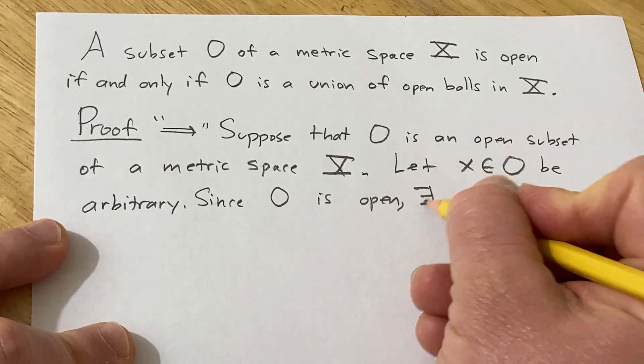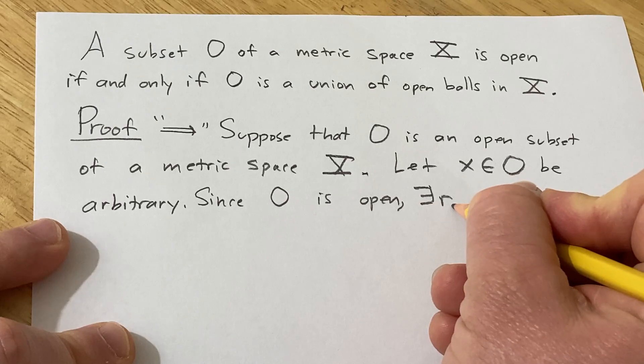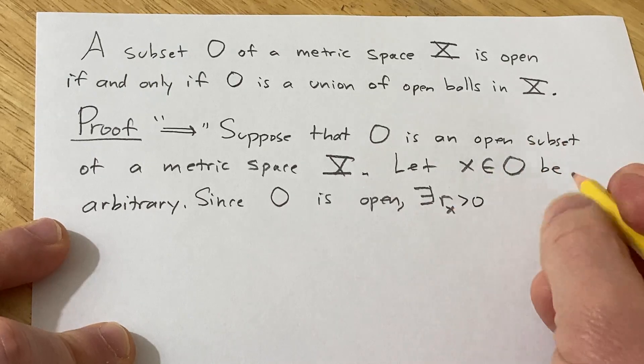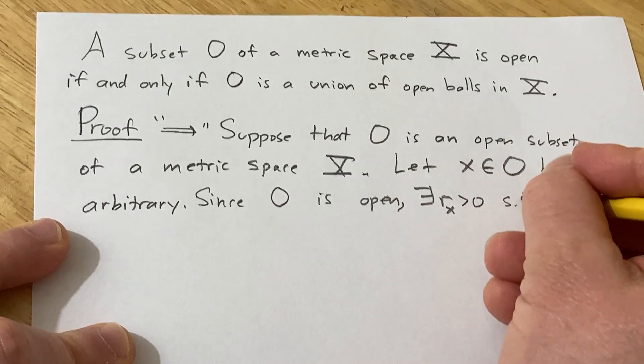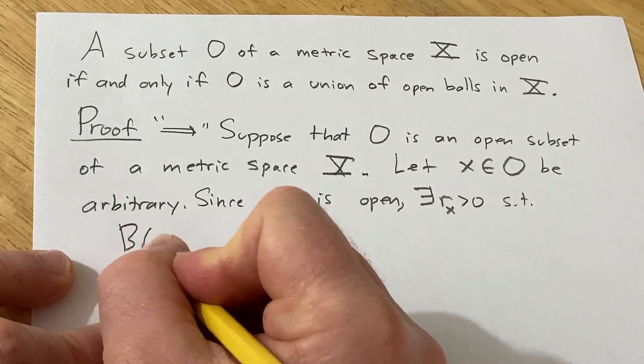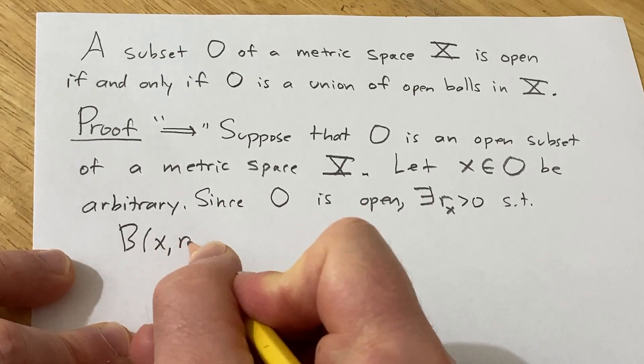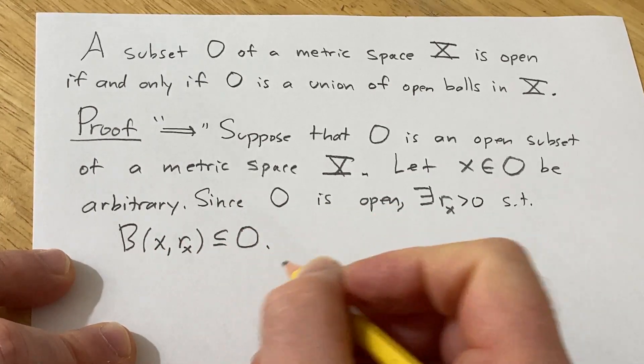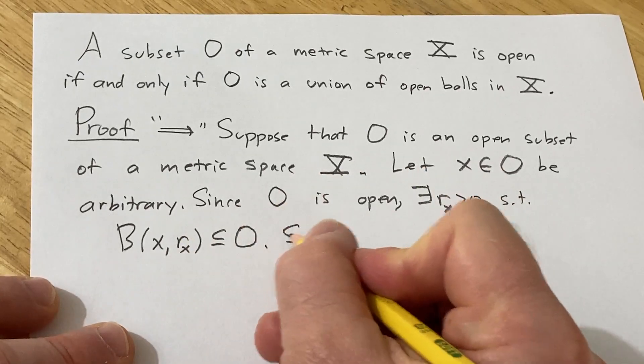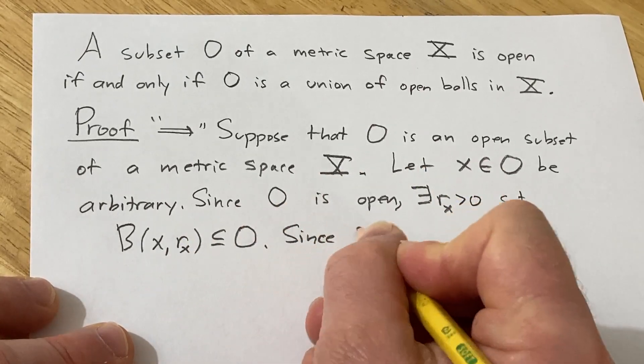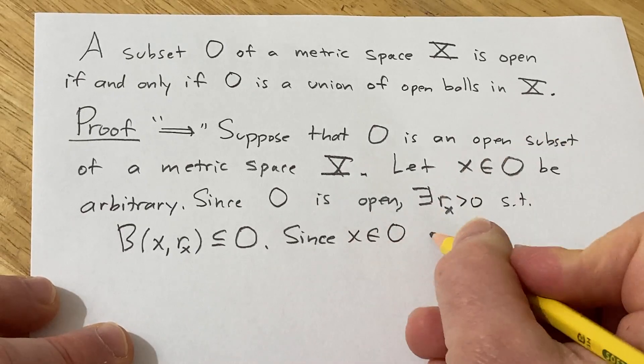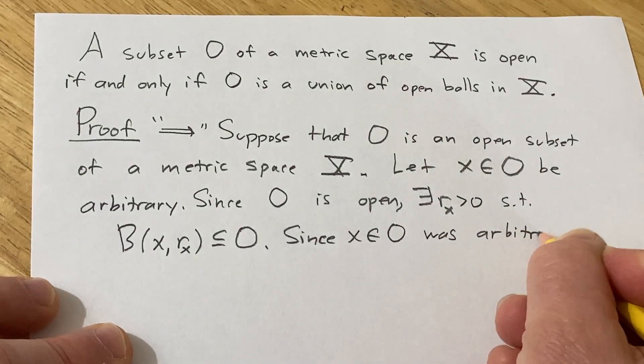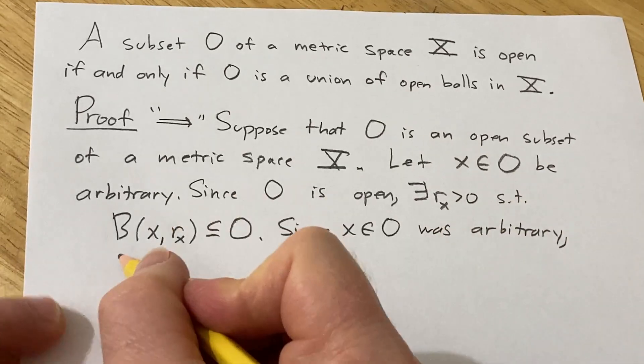So there exists some positive radius R sub x. It depends on x, so I'm including a subscript here. Such that the open ball centered at x of radius R sub x is contained entirely in O. And x was arbitrary, so since x in O was arbitrary, this holds for all x in O.